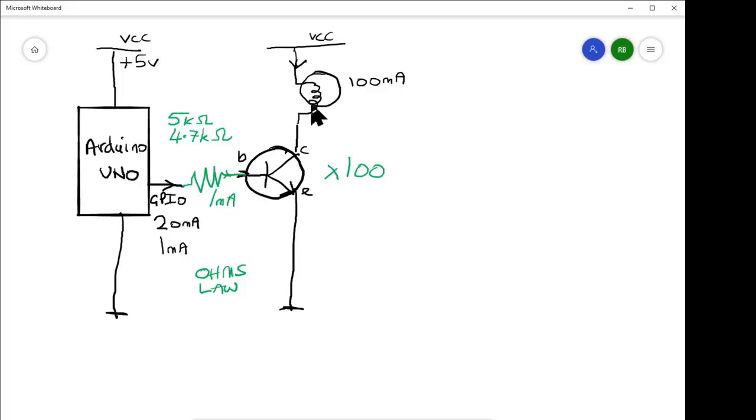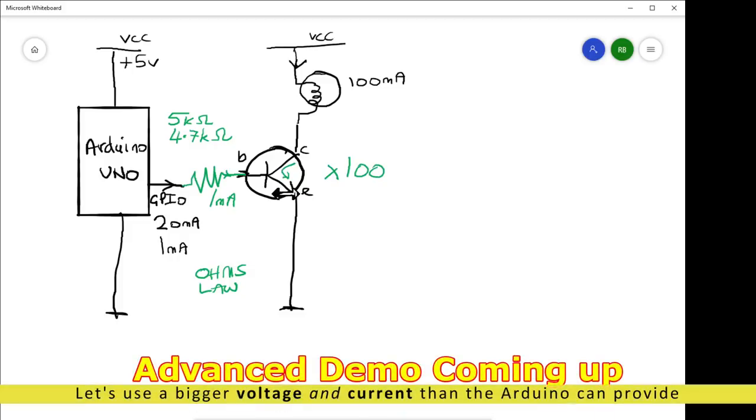We've now worked out what resistor value we need as a standard value of 4.7k ohms. 1 milliamp will flow down here, allowing 100 milliamps to flow down here through this transistor. We know this is safe because we've looked up on the datasheet that a 2N2222A can take 800 milliamps. Great. I think we're sort of done there. Hmm, not quite.